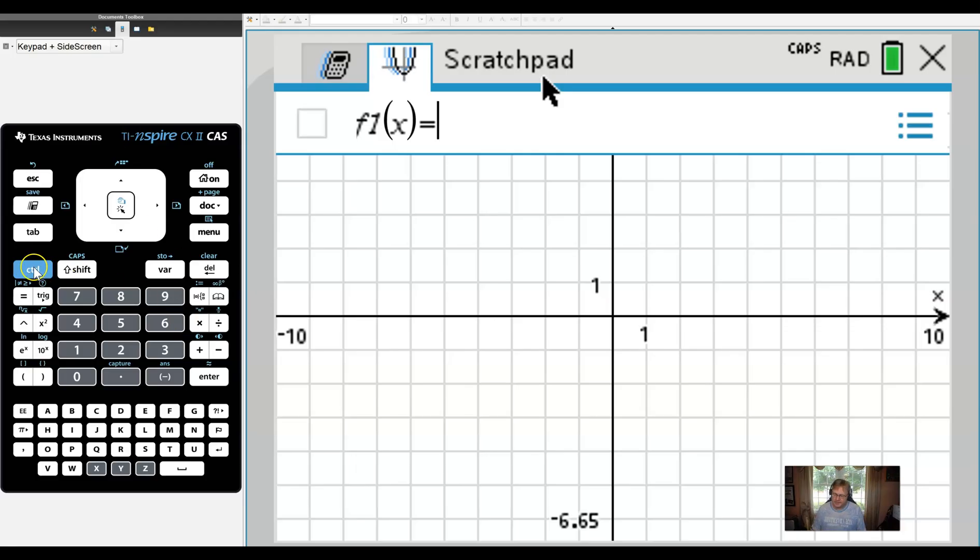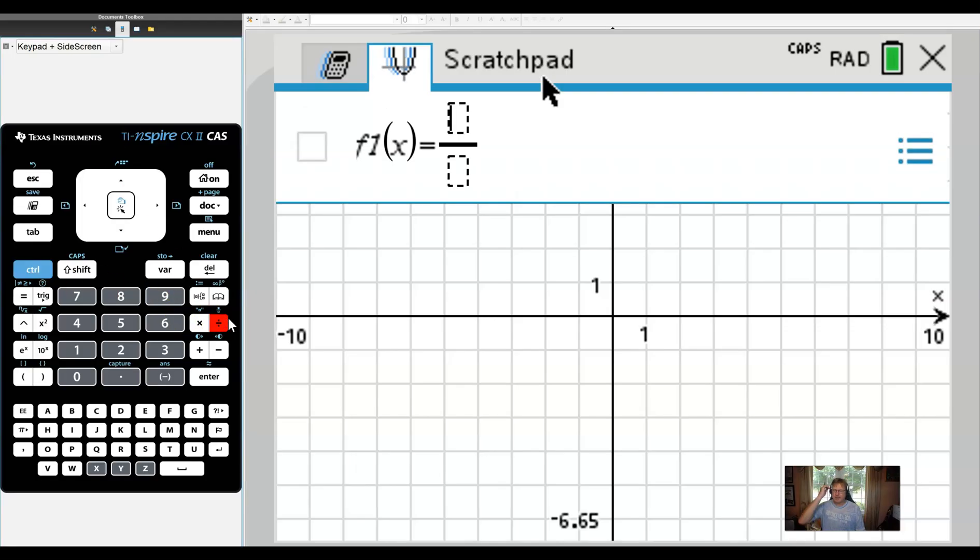So first things first, we're going to enter this fraction, control-divide. I believe that is on the TI Nspire. You can access by hitting a button and then your F1 menu to get your fractions.